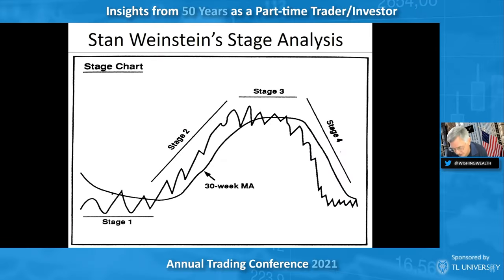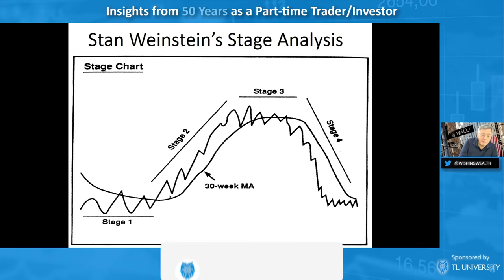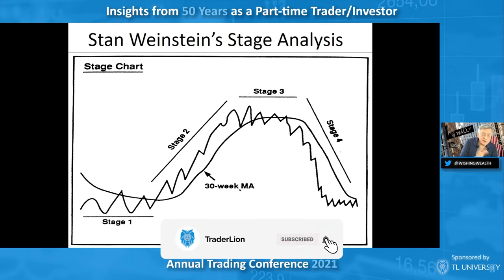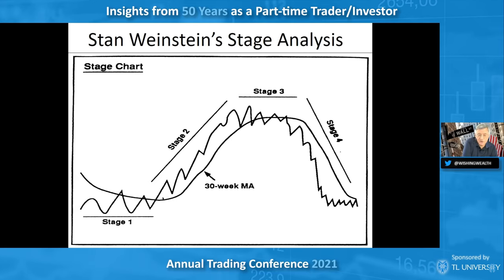The first thing I want to talk about is stage analysis, derived by Stan Weinstein — simple but really powerful. Basically, it shows a stock's price moving up in stage two, above its 30-week moving average. Stage one is where a stock is basing, then stage two is when the stock, ETF, or whatever is rising above its rising 30-week average. Then the stock and the moving average get flat.